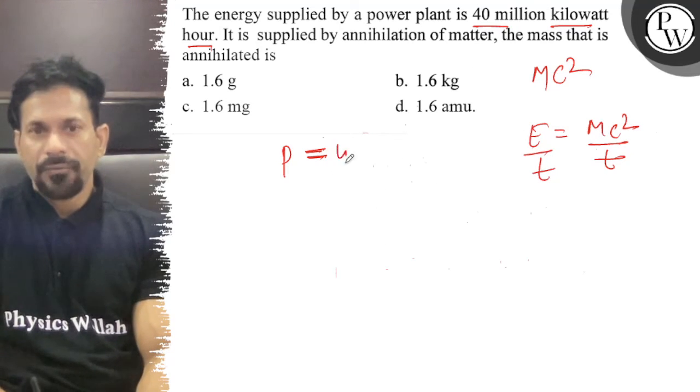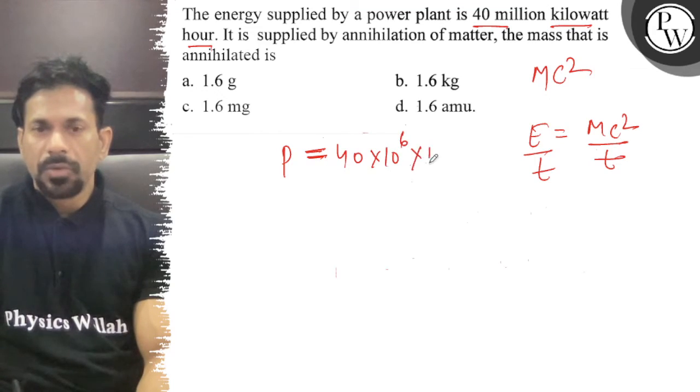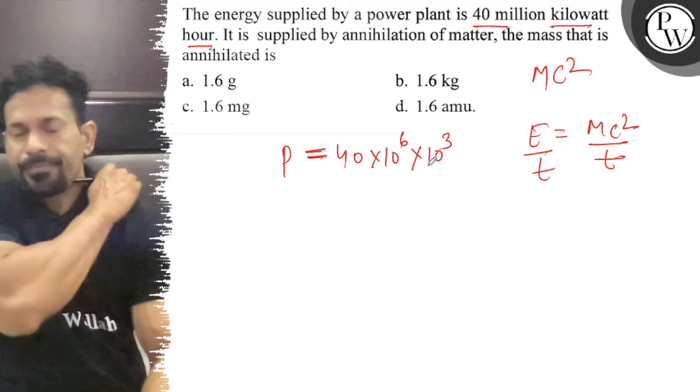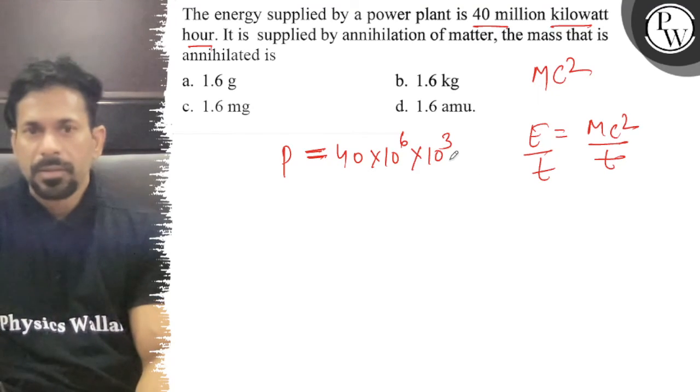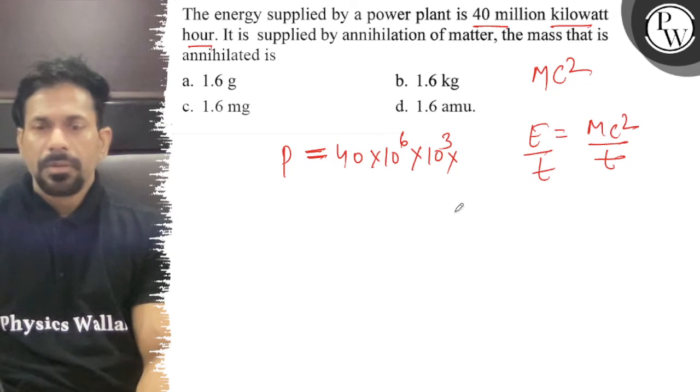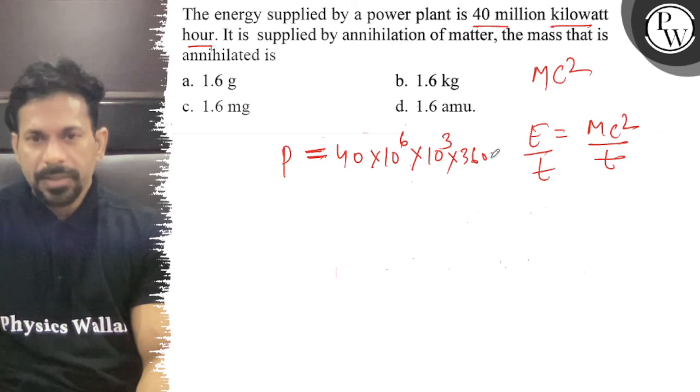If we see here, the power plant is 40 million kilowatts per hour. What into second? Second is 3600.